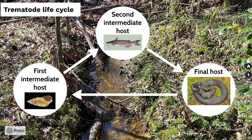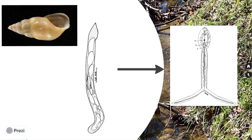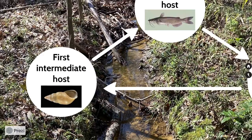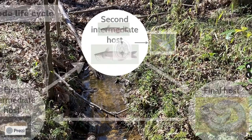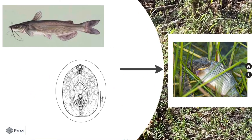Trematodes typically infect three hosts throughout their life cycle. The first larval stage infects common invertebrate species as first intermediate hosts, like aquatic snails. A searching stage is released from the snail into the water column in search of the second host. Once the trematode finds the second host, it forms a cyst.